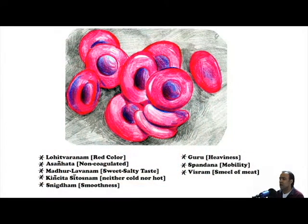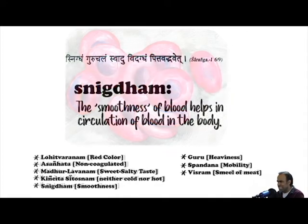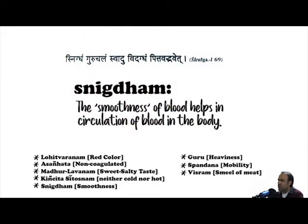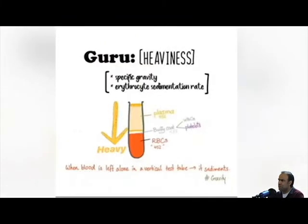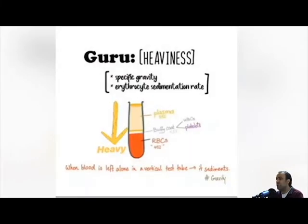Raktadatu can also be described in terms of qualities. Snigdom, or the unctuous smoothness of blood, helps blood circulate throughout the entire body, reducing the viscosity. Guru, or the heaviness, explains how the hematocrit portion of blood actually settles to the bottom of a centrifuge spun based upon differing densities and specific gravity.